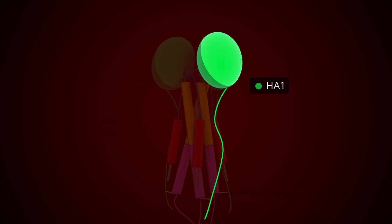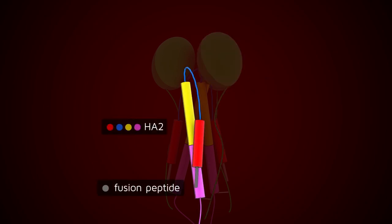HA1 has a globular domain which interacts with the cellular receptor. HA2 is protected by HA1.